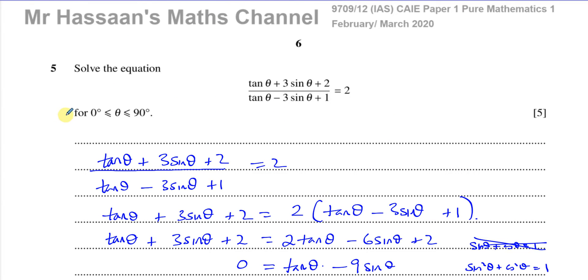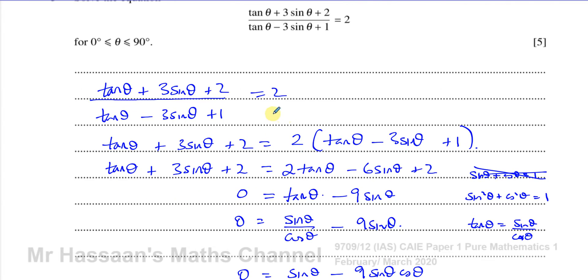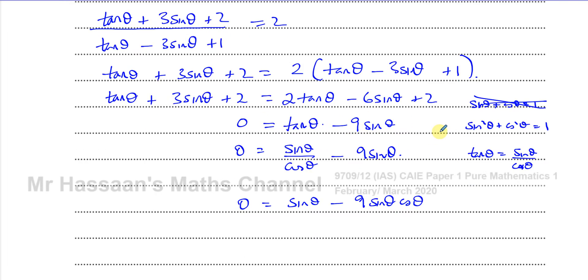All right. And we have got theta between 0 and 90. So we've got theta between 0 and 90. So I'm just writing that here so we know what our limits are so we can then know how to get the solutions.